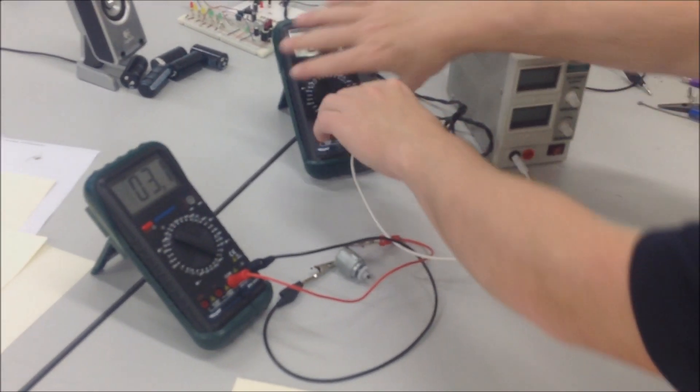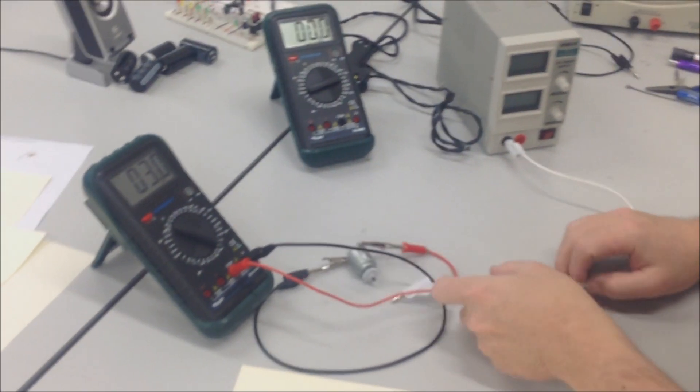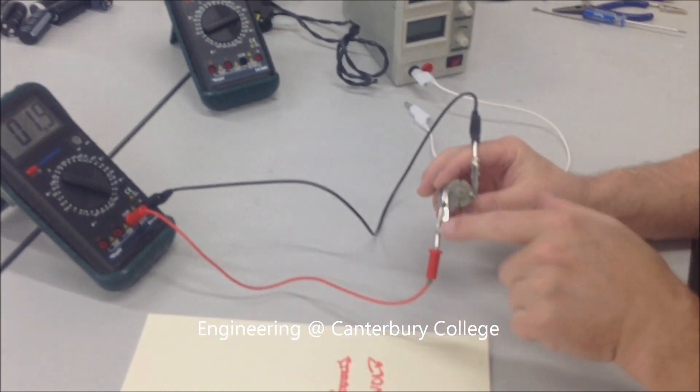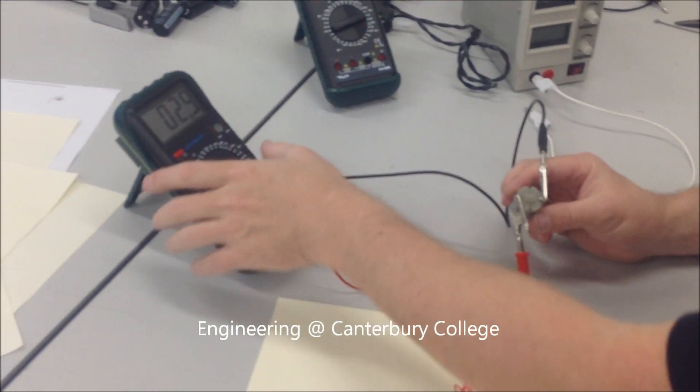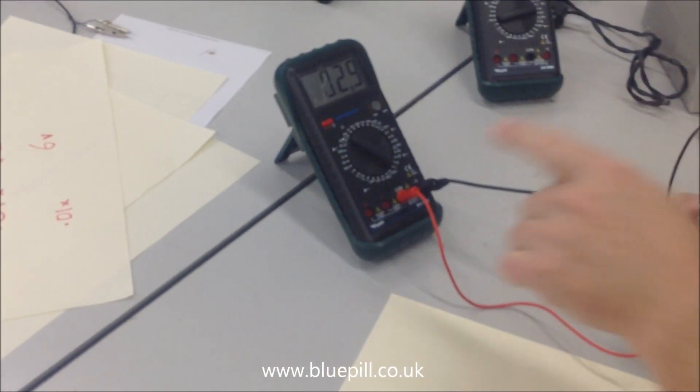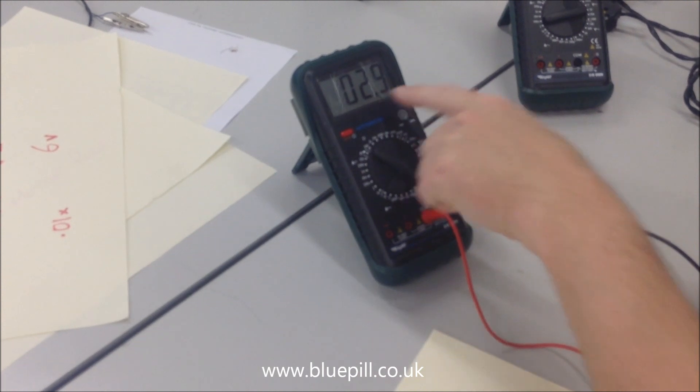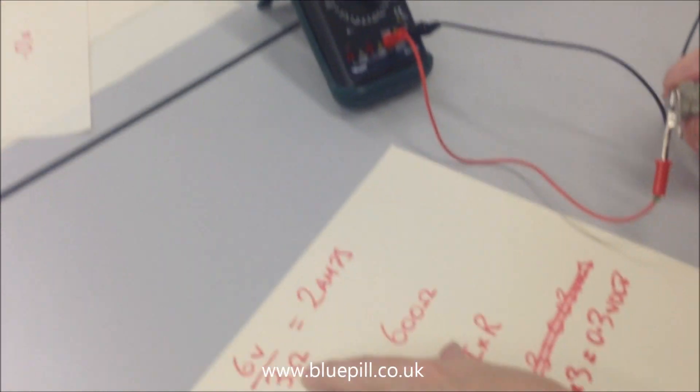So we've got our motor, it's a bit of a tangle here, try and take this out. We've got our motor connected up to an ohm meter and we're measuring roughly, it's a bit dodgy here, but it's roughly about 3 ohms there.